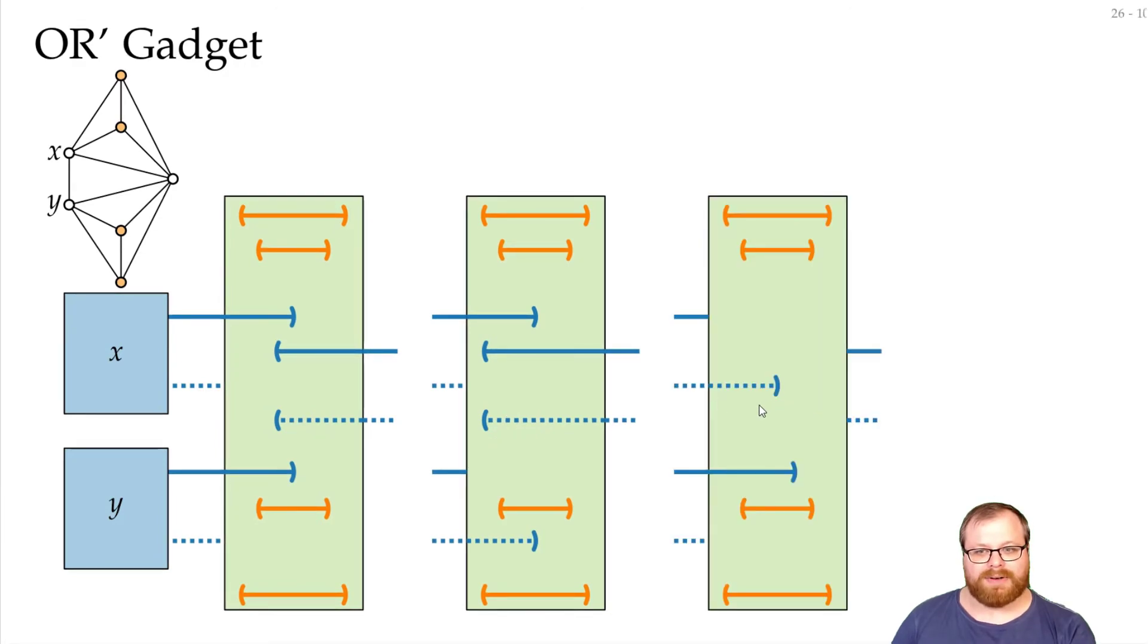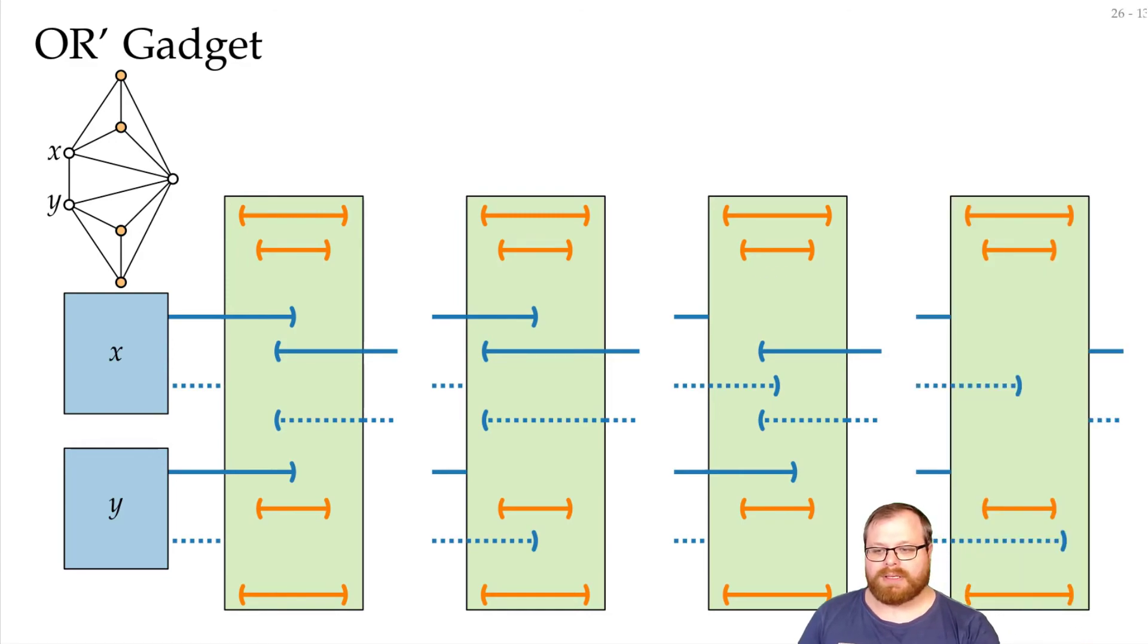Now if X is false and Y is true, then we can place it here. Here it sees both of them, or we can place it here, it sees both of them, and we also block the unwanted edges between these. On the other hand, if both are false, then of course we can place the bar here, we get both visibilities.